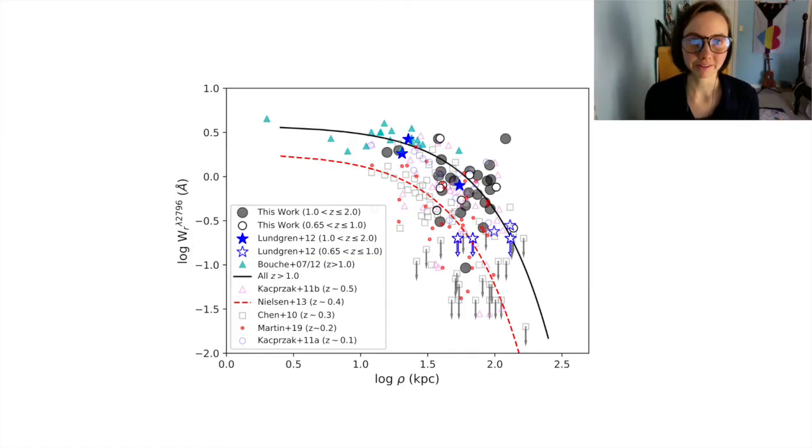It has been well established that magnesium-2 equivalent width is inversely correlated with impact parameter. Our data, represented by gray circles and blue stars, support this well-established model. And additionally, when we compare our data to previous studies, we see significant evidence of redshift evolution, driving the equivalent width up at higher impact parameters when compared to lower redshift samples.